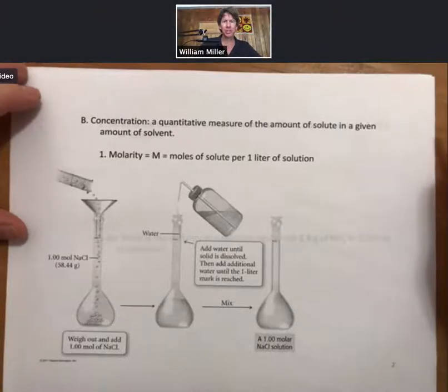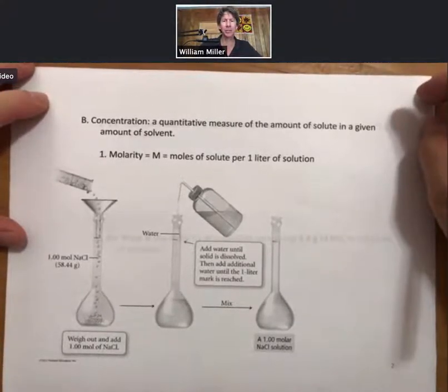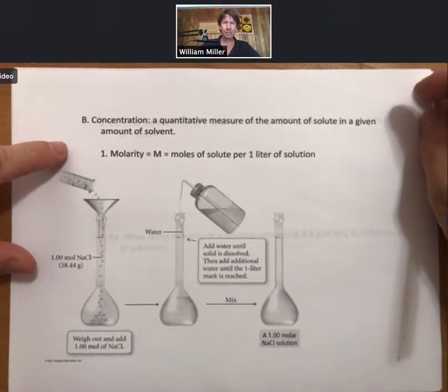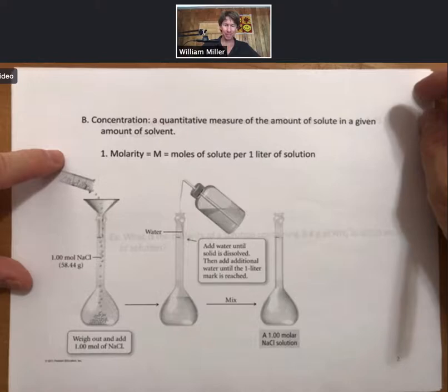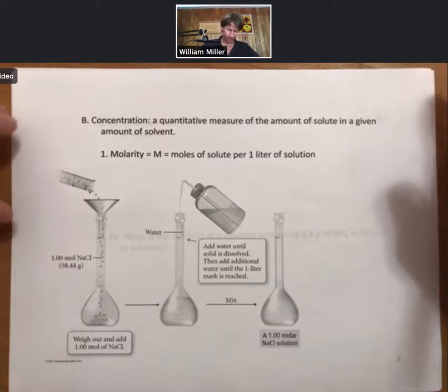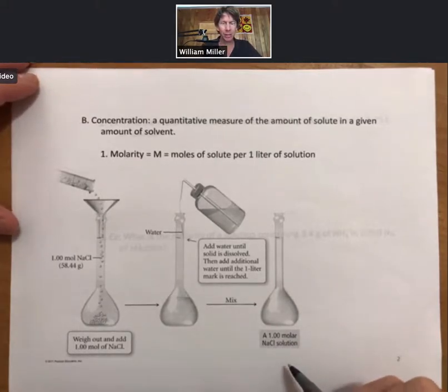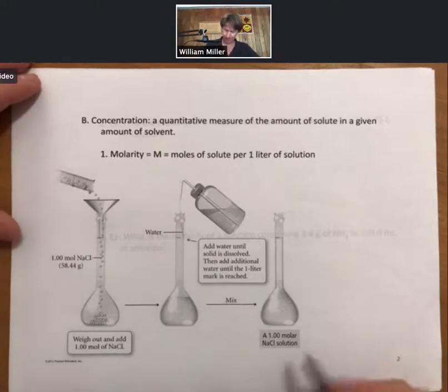Definition of concentration that we will use is a quantitative measure of the amount of solute in a given amount of solvent. The unit of concentration that we use by far the most is molarity. It is represented by capital M, and it is moles of solute per one liter of solution. If we want to make a one molarity solution, also called a 1.00 molar solution, we love molarity so much we give it a cute nickname.